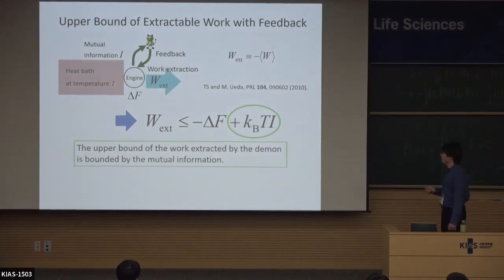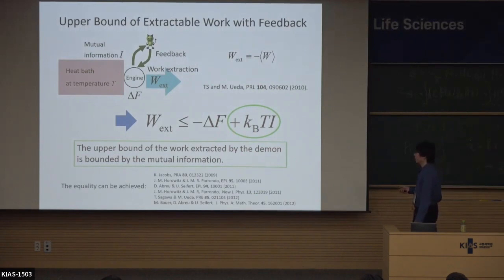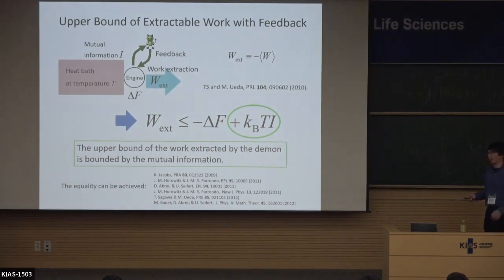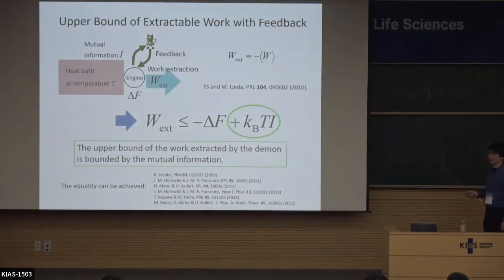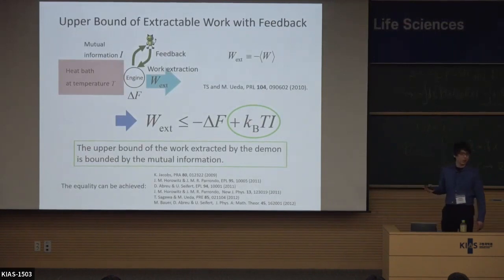This sets the fundamental upper bound of the capacity of Maxwell's demon. Even if the demon is very, very clever, the work extraction cannot exceed this new bound. We have the mutual information here instead of the Shannon information or something. An important point is that the upper bound of this inequality is indeed achievable if we appropriately design the feedback protocol, so in that sense this is an optimal inequality that sets the upper bound of the demon's capacity.